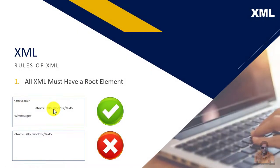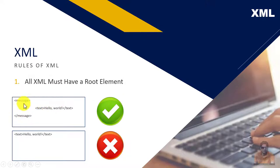Before writing the XML file, there are a few rules we have to learn. The first one is: all XML must have a root element. The root element means the primary element or the primary tag of the XML file. Without a primary tag or root element, you can't write down any kind of XML file.